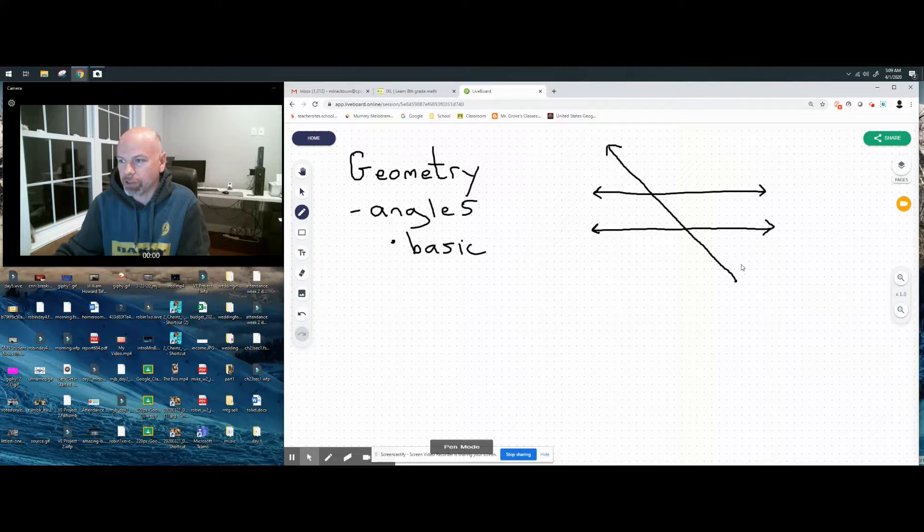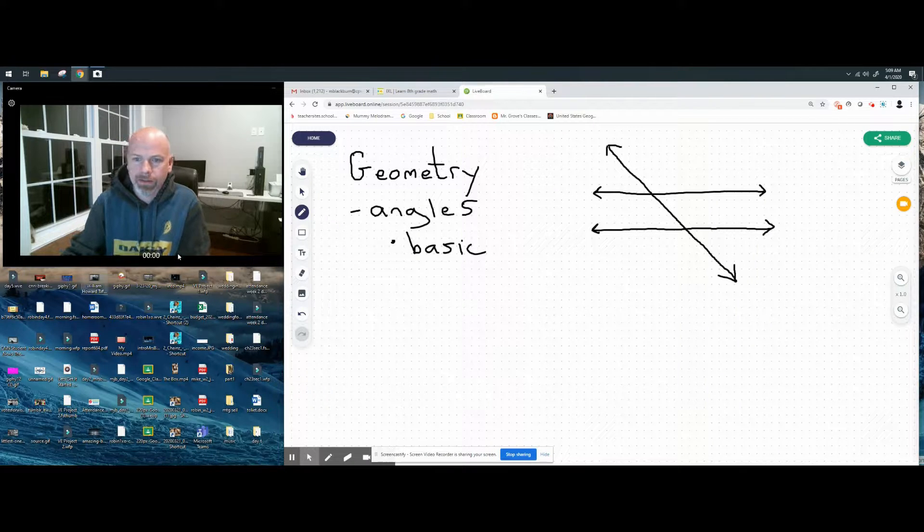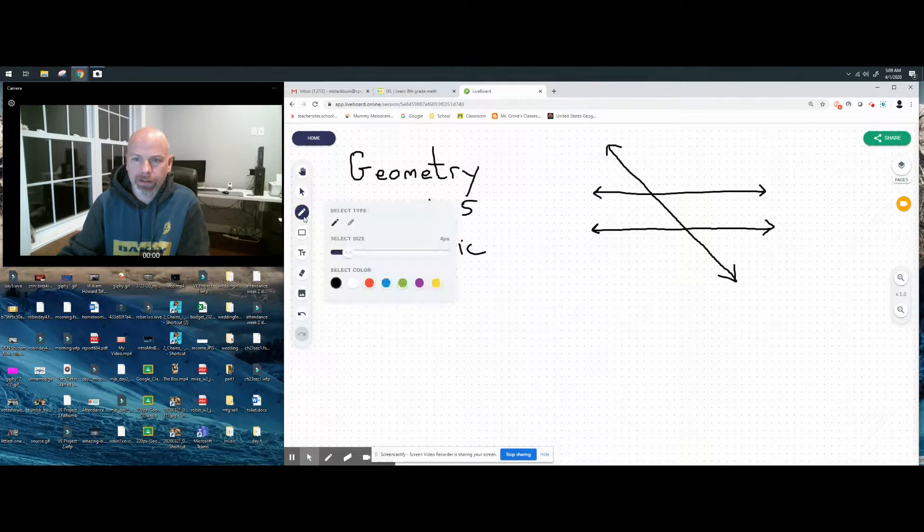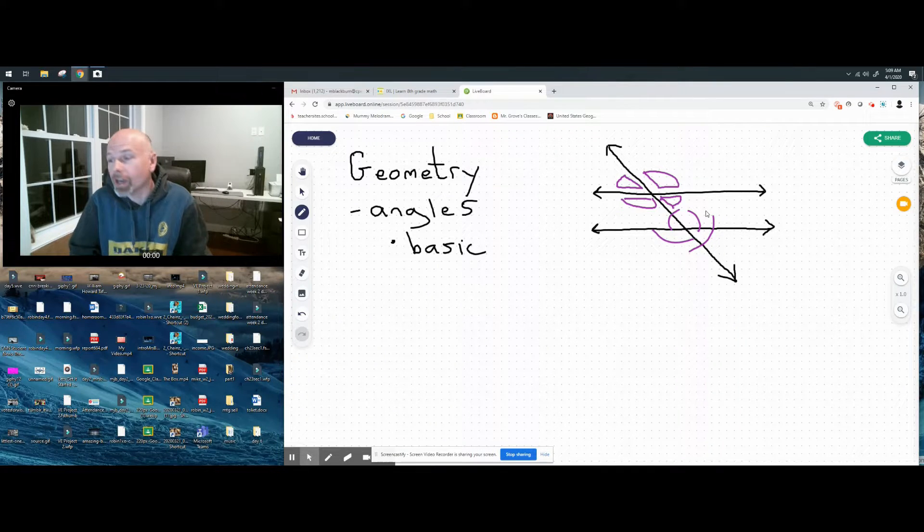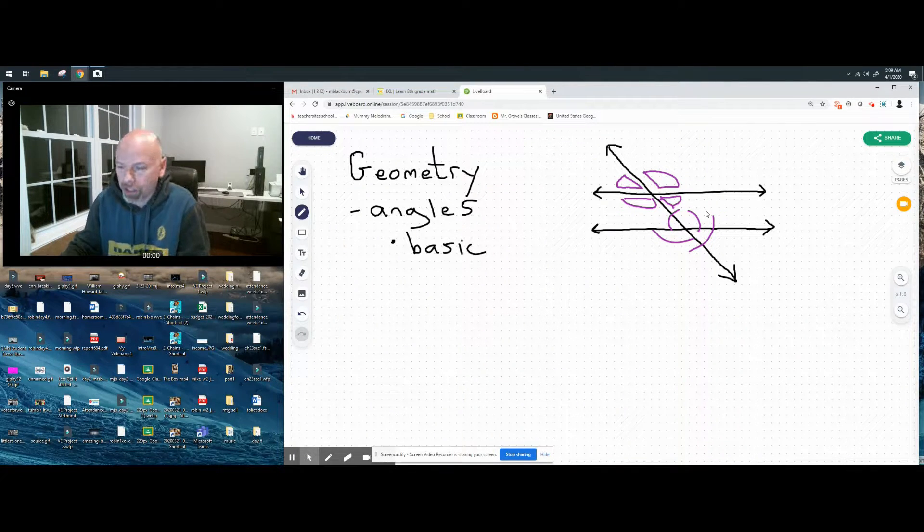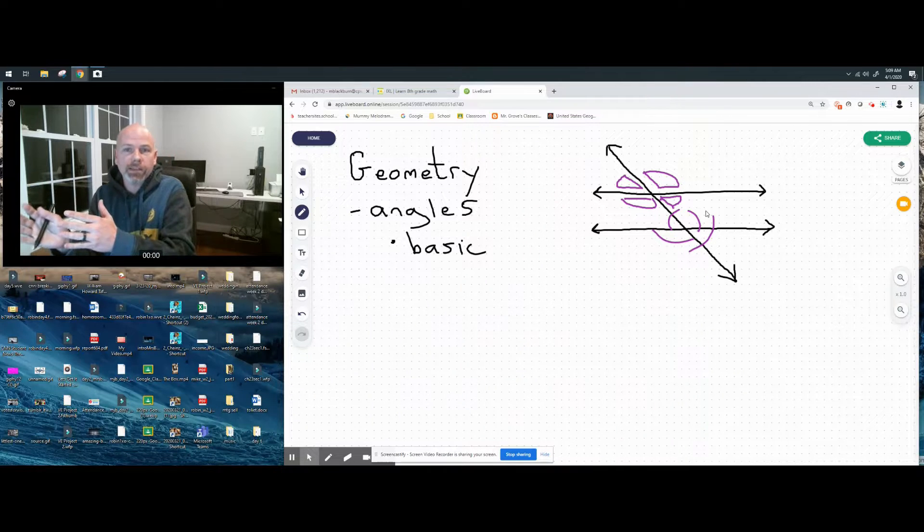As you can see, let's change our color here. Many different angles are created in this shape - there's four right here, five, six, seven, eight - at least eight different types of angles. And these angles have relationships.